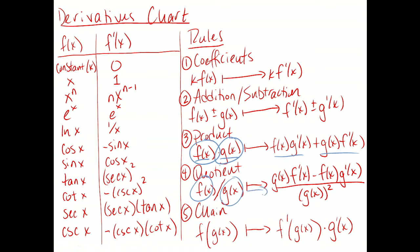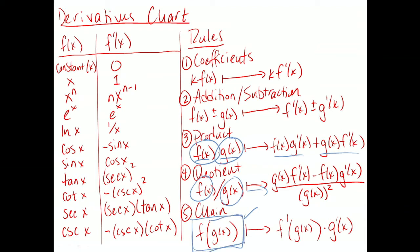The chain rule is where more things can go wrong in terms of the setup. Getting what you're looking at to match the chain rule format requires you to identify who's playing the role of f and who's playing the role of g. For the product and quotient rules you just look and see, but for the chain rule you have to think a little harder about what the setup means.